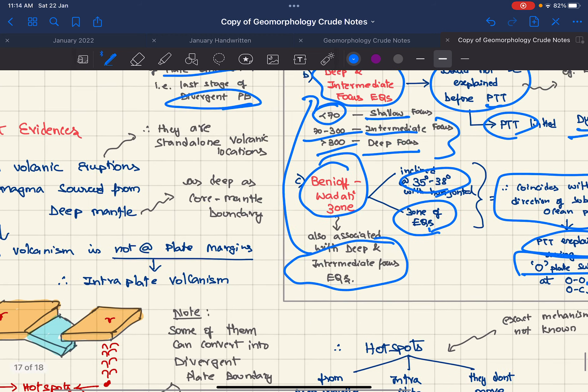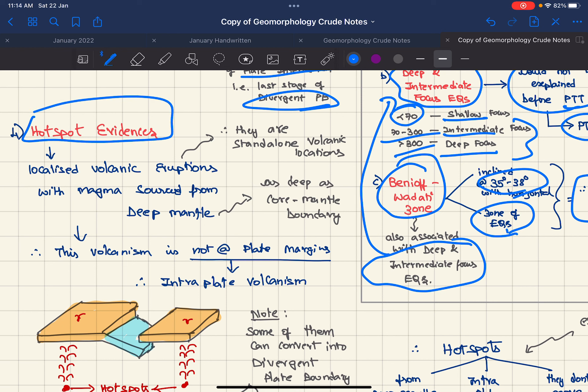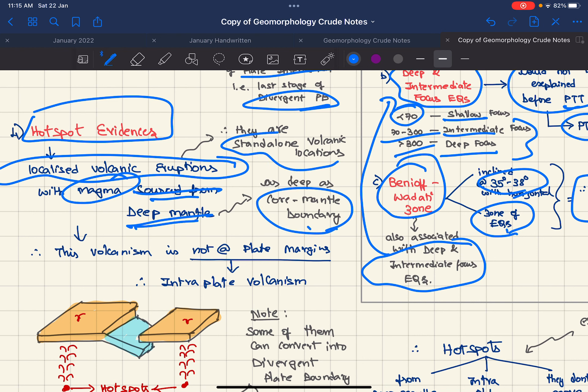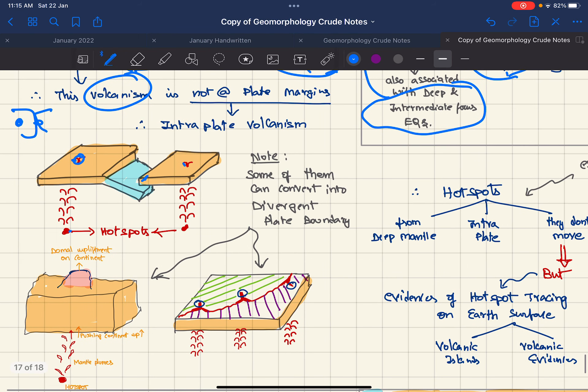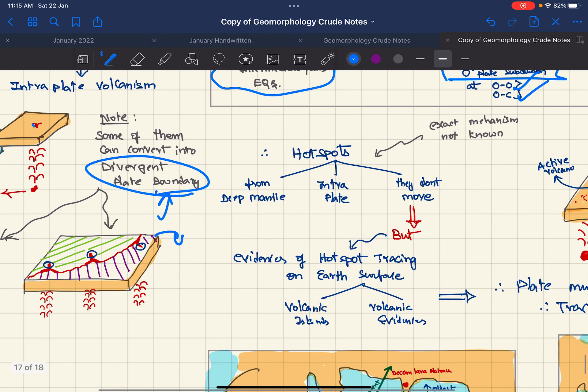Next thing is hotspot evidences. Hotspots are localized volcanic eruptions with magma sourced from deep mantle, sometimes as deep as core-mantle boundary. These are standalone volcanic locations. This volcanism will not be at the plate boundaries, rather it will be inside the plate as intraplate volcanism. Later, some of them may develop into divergent plate boundaries with domal upliftment, rift valley, and nascent ocean.